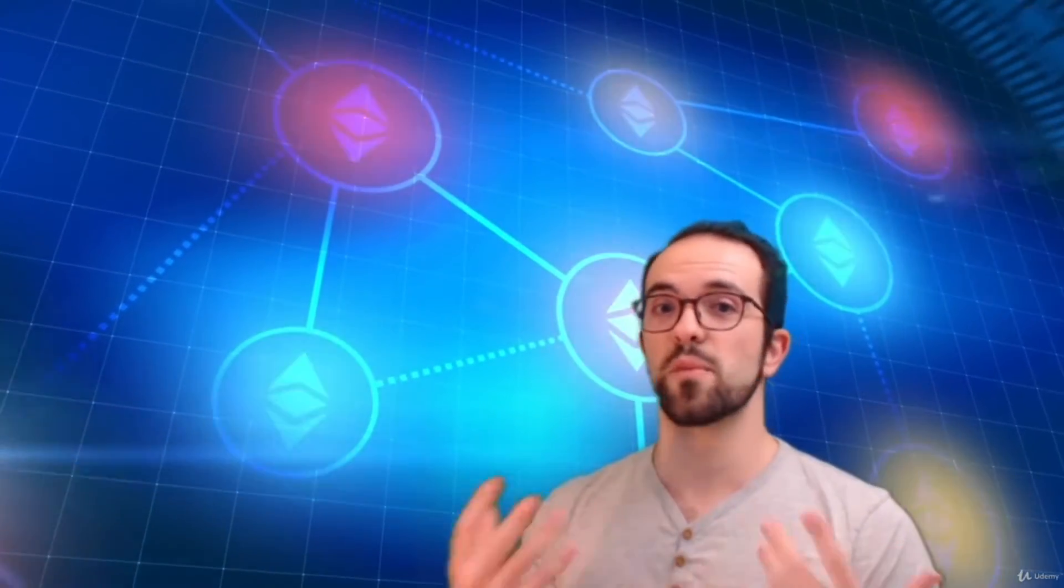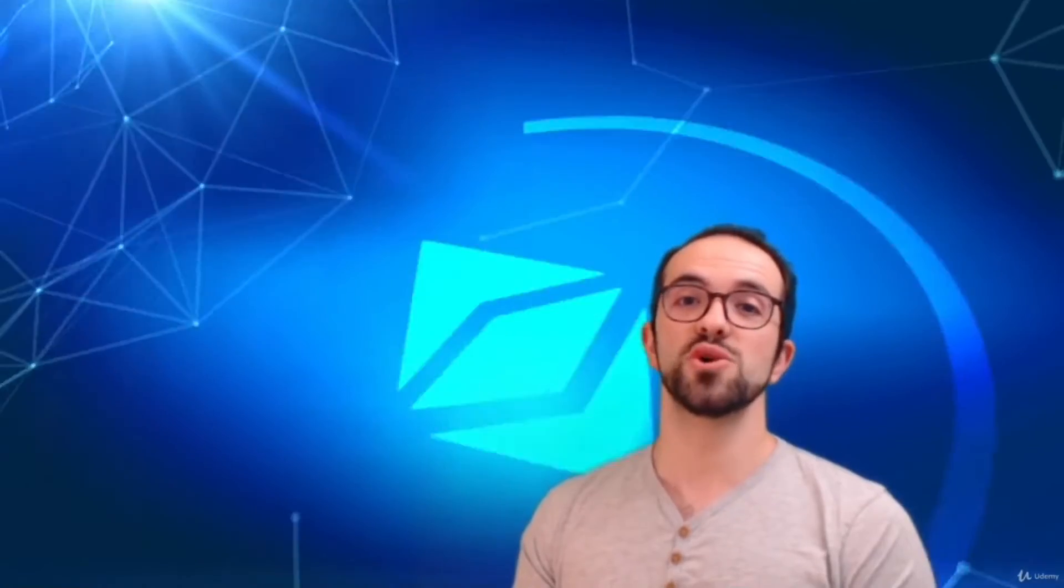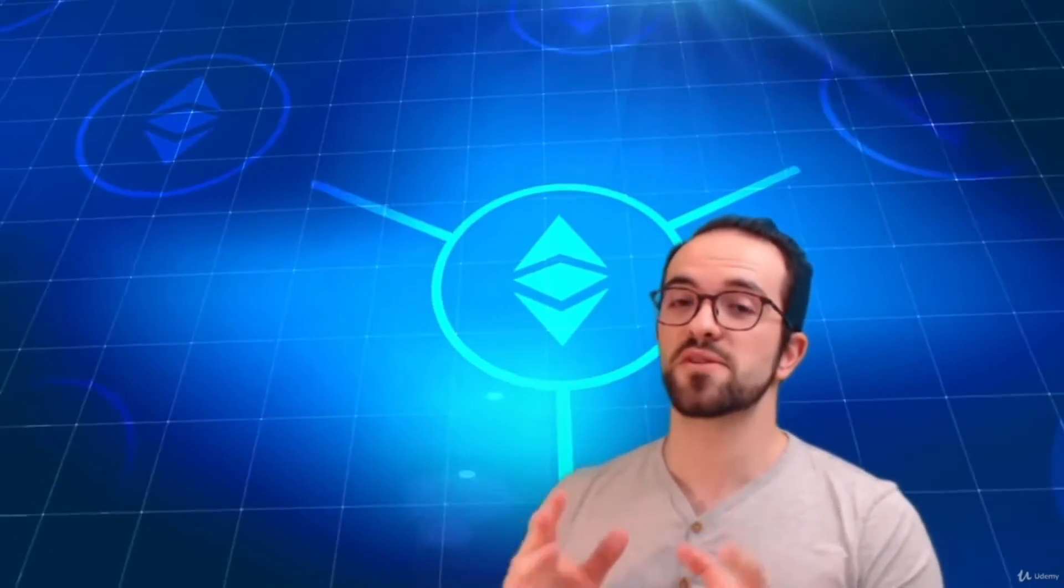In late 2008, Satoshi Nakamoto released a white paper describing a solution that would solve these issues. Bitcoin, firstly. Bitcoin is regulated mathematically through algorithms to maintain the supply of the assets. And there is no centralized authority that controls the creation of the assets and this eliminates the need for middlemen to help us to reduce transaction costs.